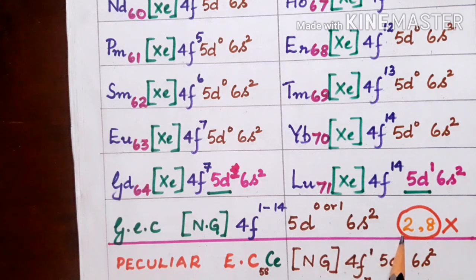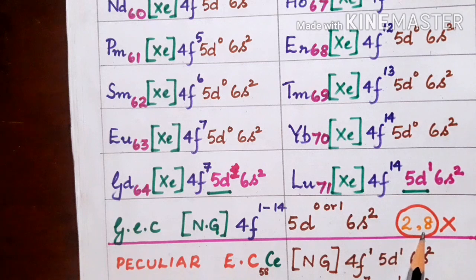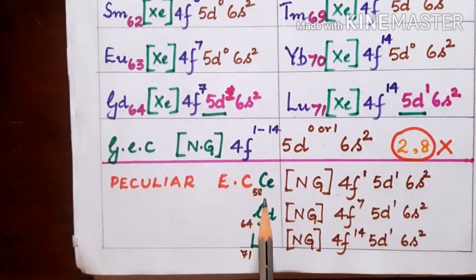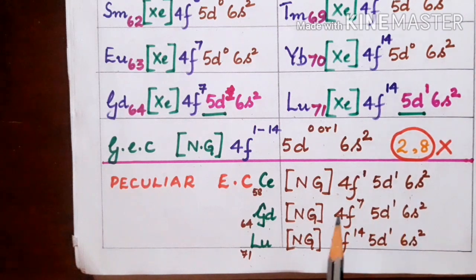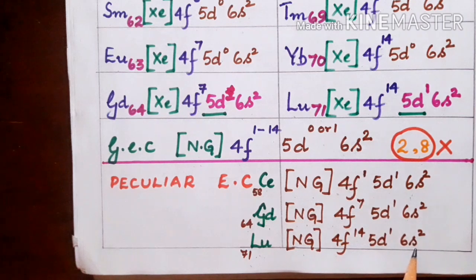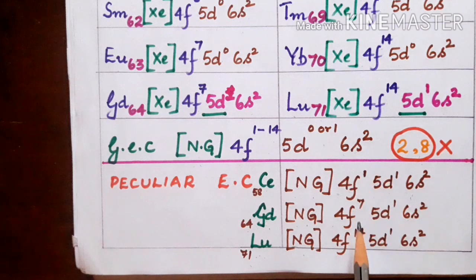On examining, we find that f² and f⁸ configurations are absent in lanthanides. The peculiar configurations shown are: cerium with [noble gas] 4f¹ 5d¹ 6s², gadolinium with [noble gas] 4f⁷ 5d¹ 6s², and lutetium with [noble gas] 4f¹⁴ 5d¹ 6s². Except for these three elements, other lanthanides do not show the 5d¹ configuration.